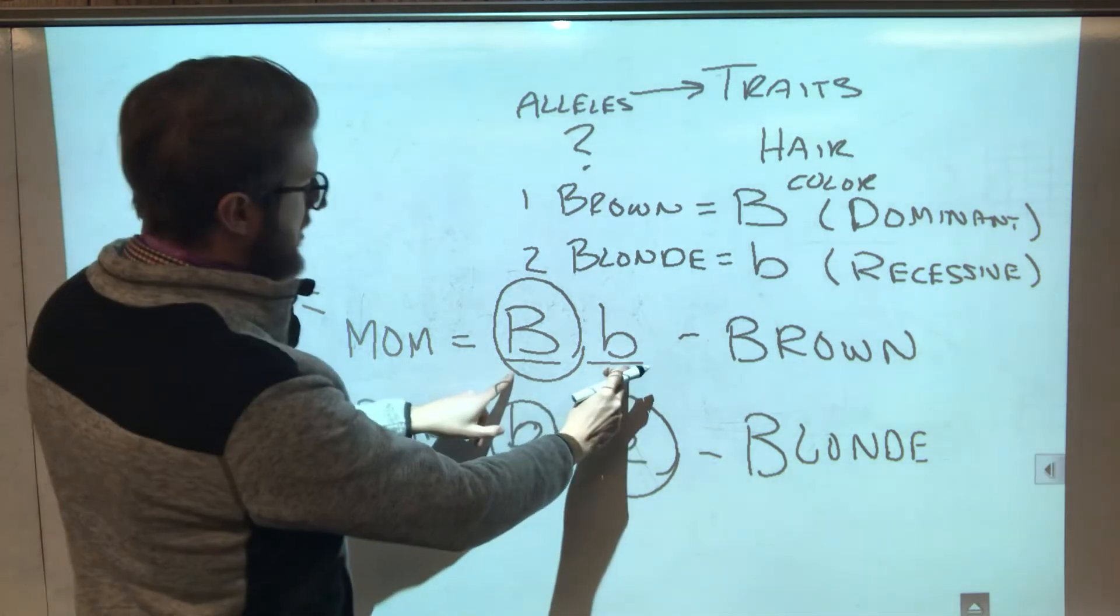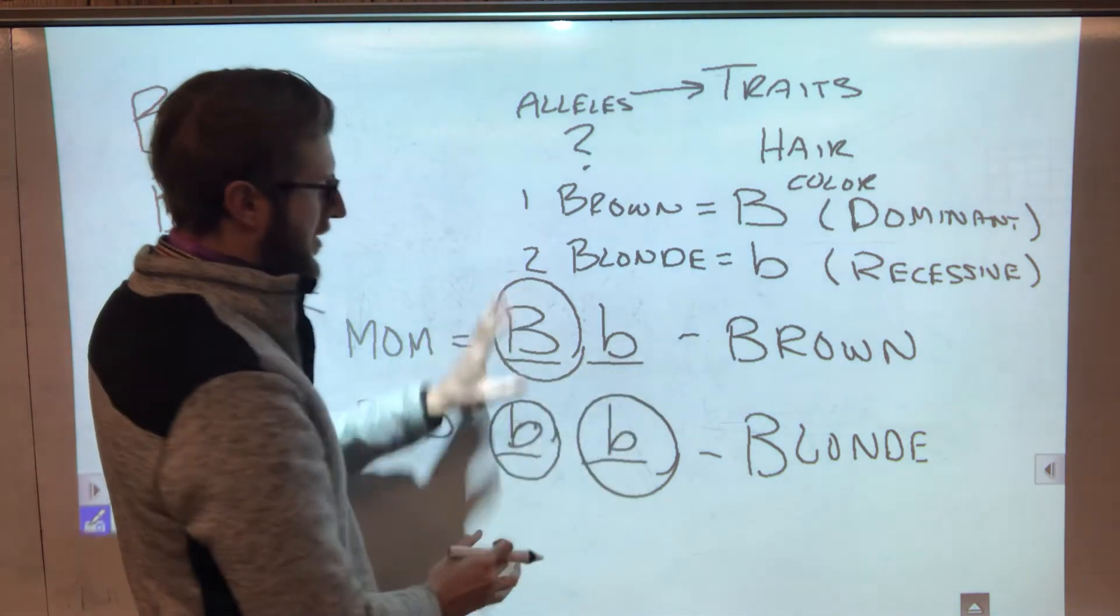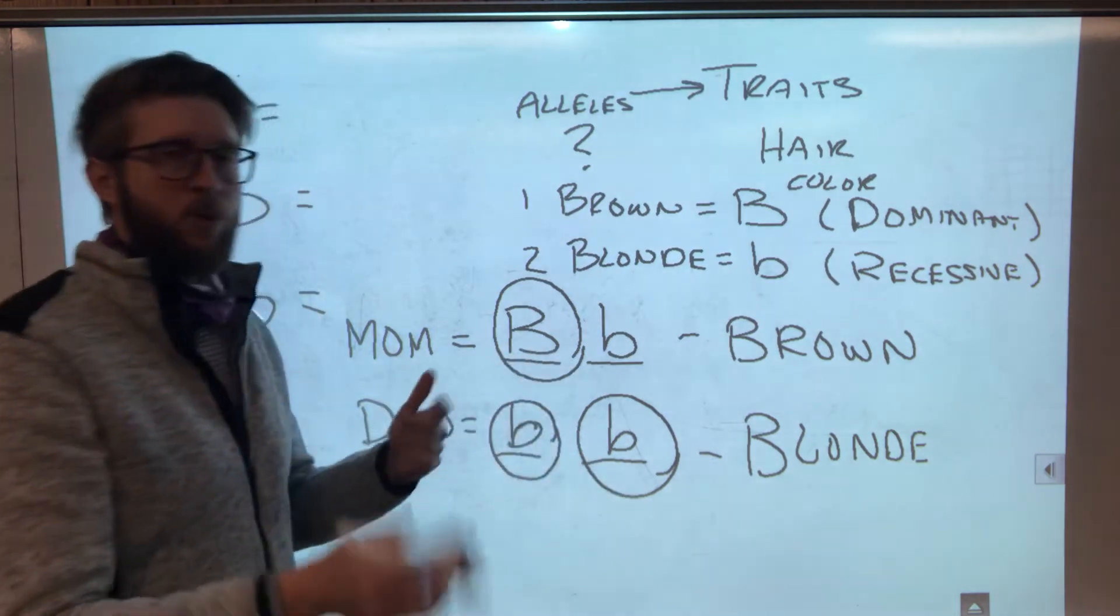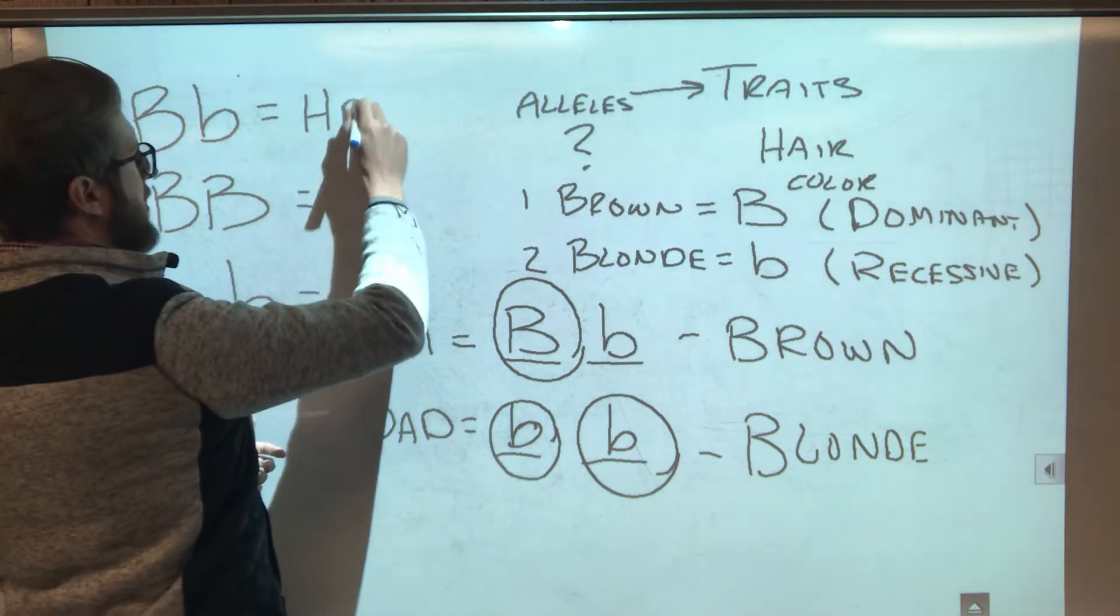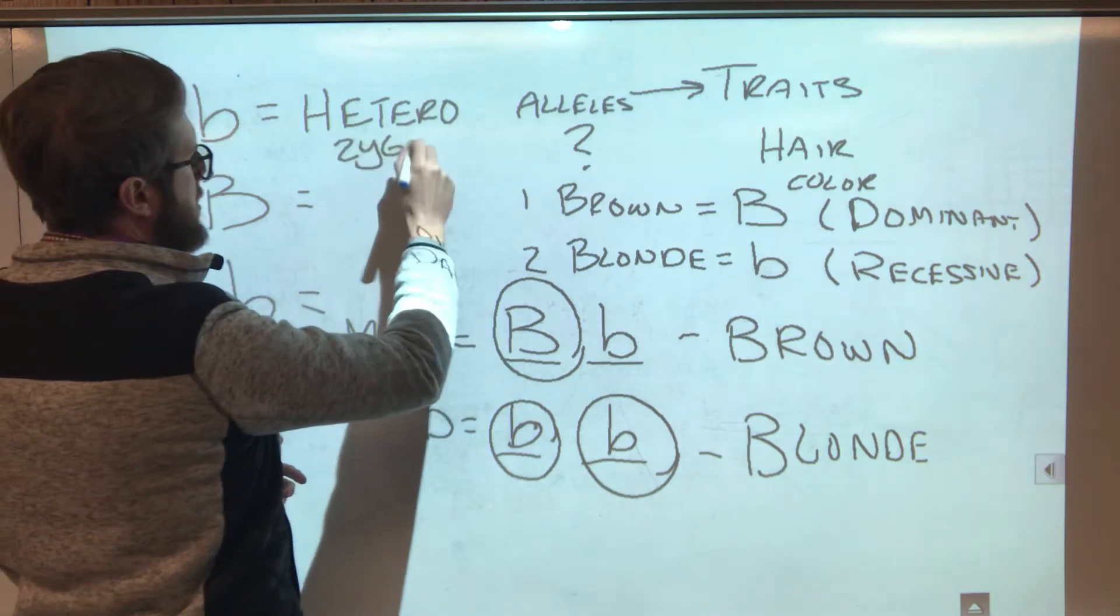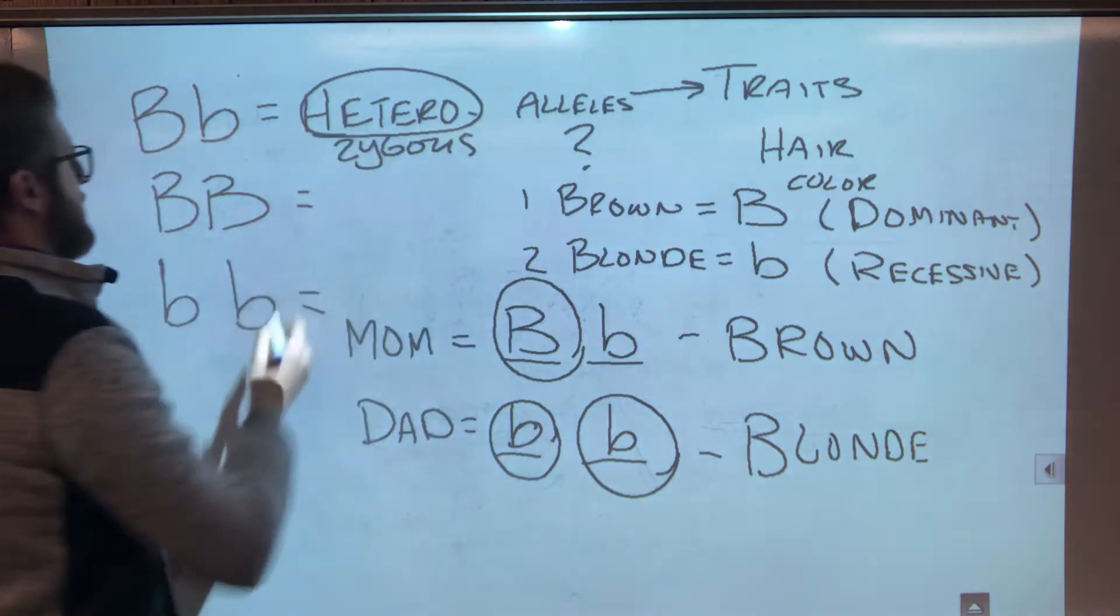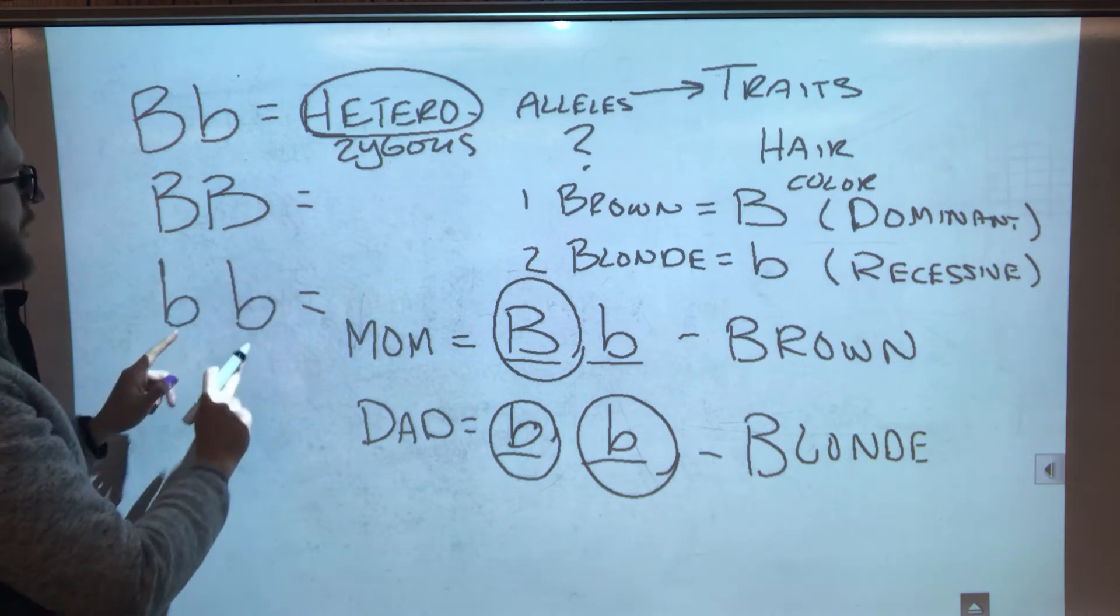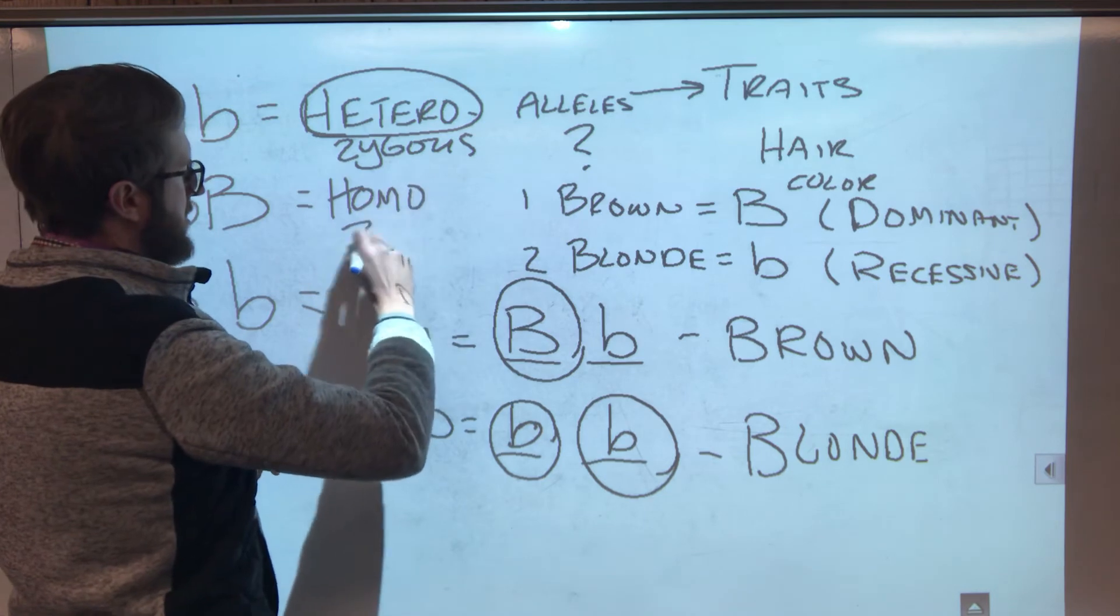So see these two alleles. They're going to be either big or little. Either dominant or recessive. So if they are different meaning that one is dominant one's recessive or one's big and one's little, then that means that it is what's called heterozygous. This is actually one word I just ran out of room. Okay heterozygous. Now hetero means different and if they're both the same meaning they're both big or they're both small then that is called homozygous. Homo means same.